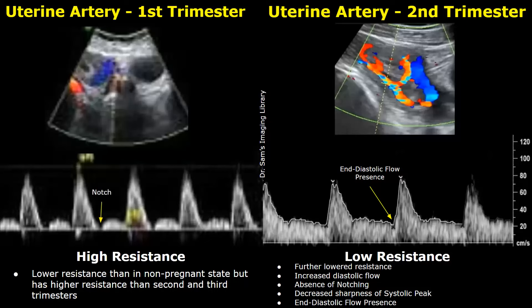In the second trimester, there is further lowered resistance due to increased demand for blood by the uterus, growing fetus, and placenta. The systolic peak is more rounded than in the first trimester, there is significant forward flow during diastole, and a significant end diastolic velocity of more than 20 centimeters per second — all features of a low resistance waveform. In the third trimester, the resistance is even lower than in the second trimester.